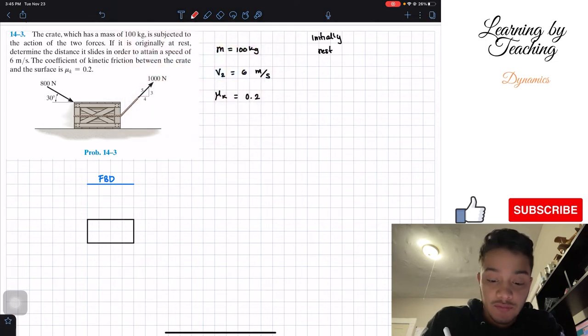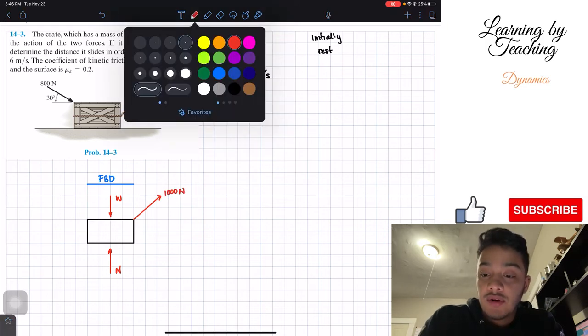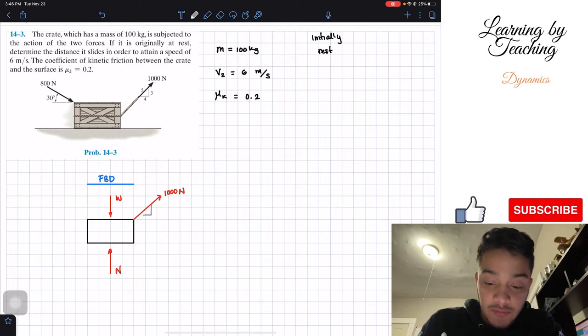So we got our crate that looks like this rectangular shape. Now, the first force that I always think of sometimes is the weight. We also have the opposite of the weight, usually, which is the normal force. Then we have the two forces that are given to us, which is equal to 1000 newtons in the direction similar to a 3-4-5 triangle.